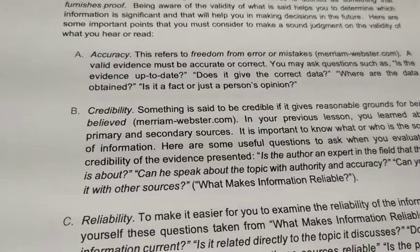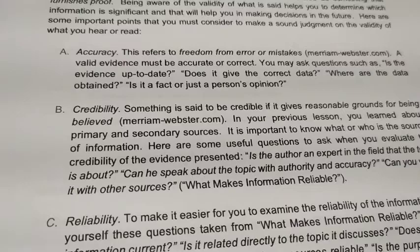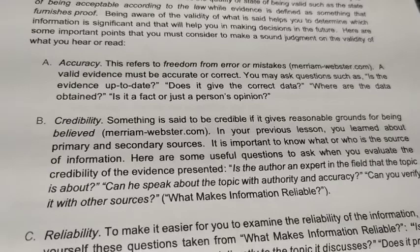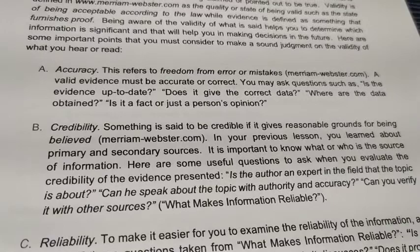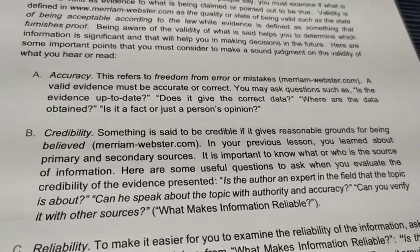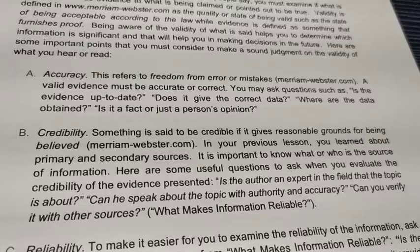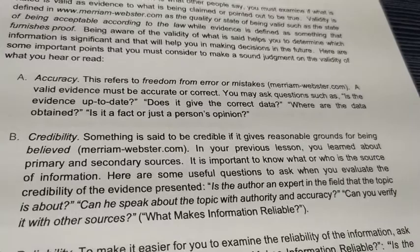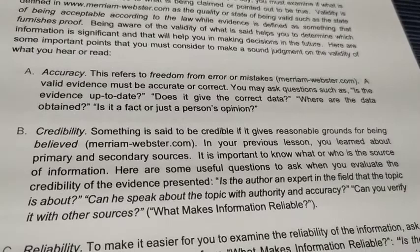When we say credibility, something is credible if it gives reasonable grounds for being believed. In our previous lesson, we learned about primary and secondary sources. We should ask: Is the author an expert in the field the topic is about? Can he speak about the topic with authority and accuracy? Can you verify it with other sources? When we say credibility, we refer to the one who made the post, composed it, or wrote it — whether he or she is credible about giving information for a particular profession, topic, or issue.